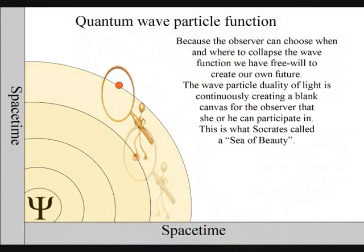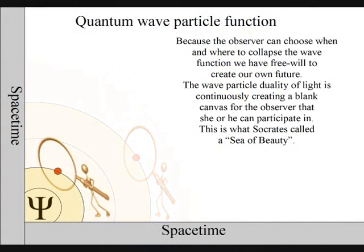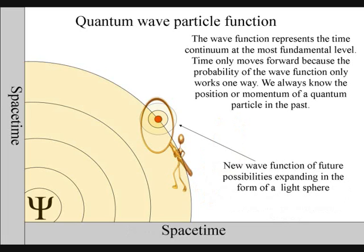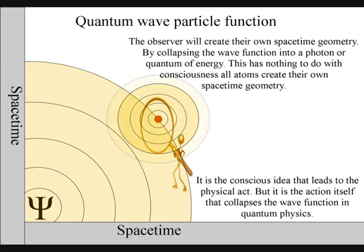But is it because an observer can choose when and where to collapse a wave function that we have free will? Life will create its own ripples in the fabric of space-time, forming its own broken symmetry of its own evolutionary path.